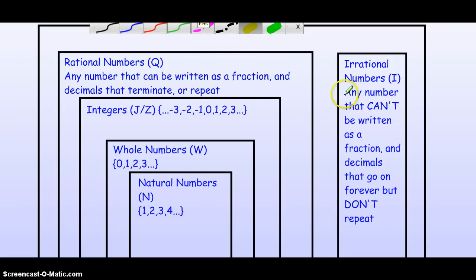And because it's opposite of rational, it's the opposite definition. So, these numbers can't be written as a fraction. And the decimals that fall into this set, these decimals, they go on forever, but they don't repeat.